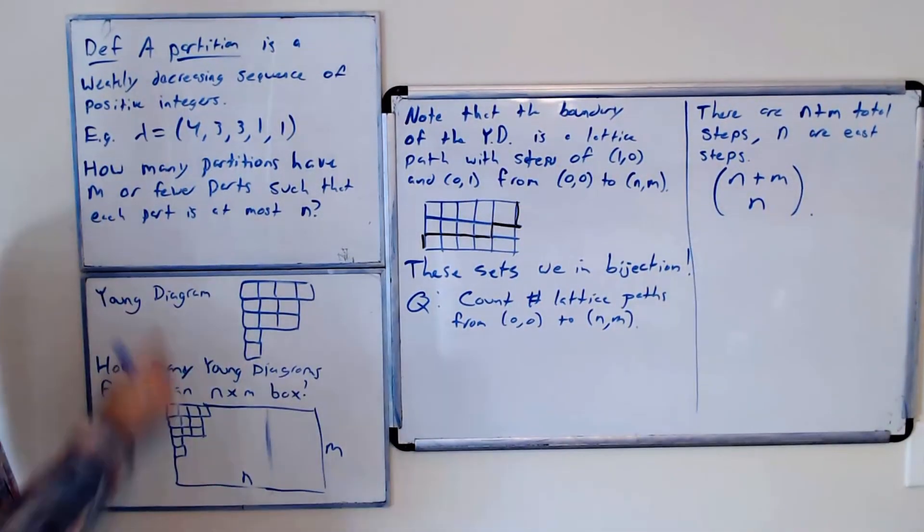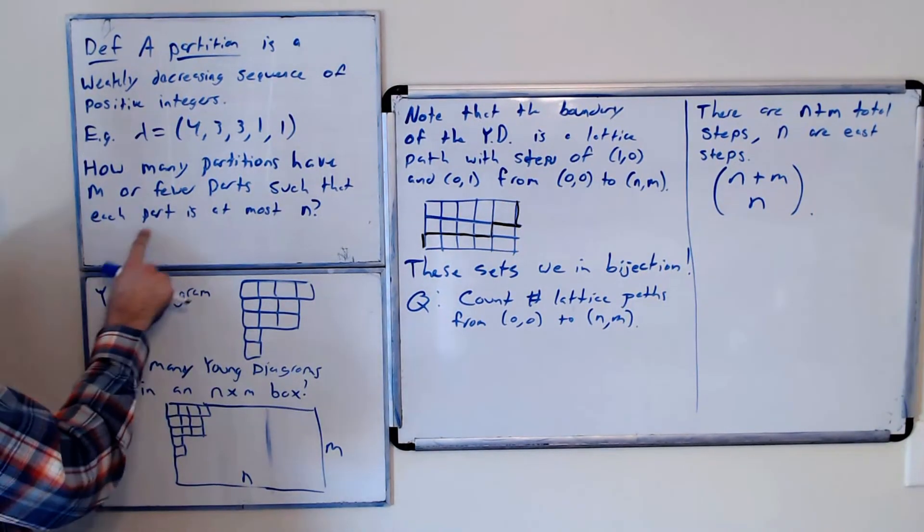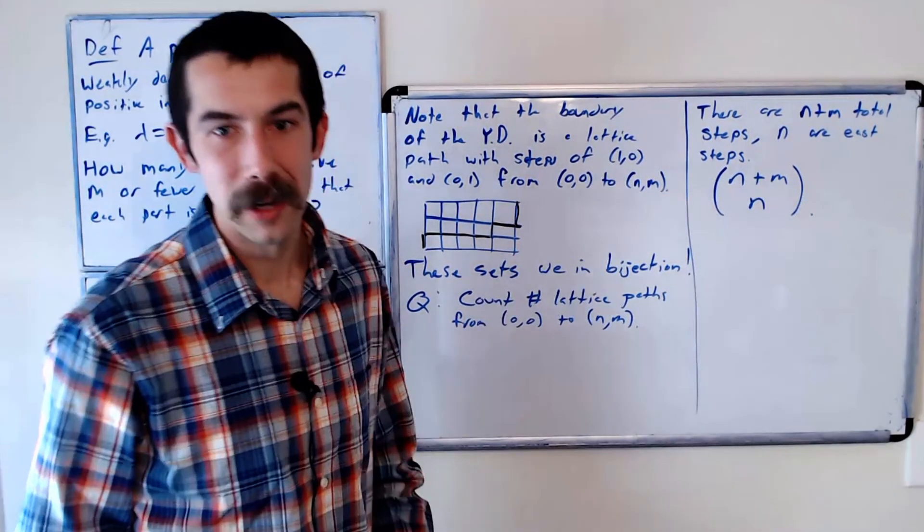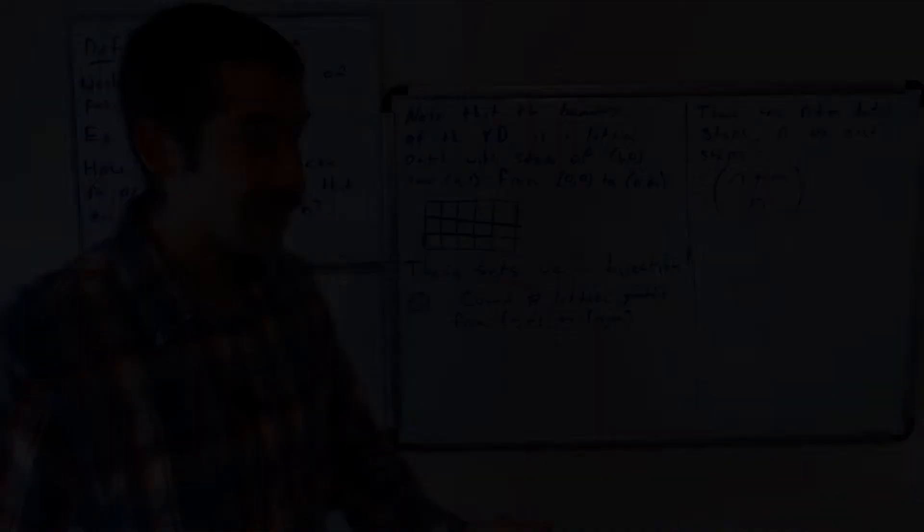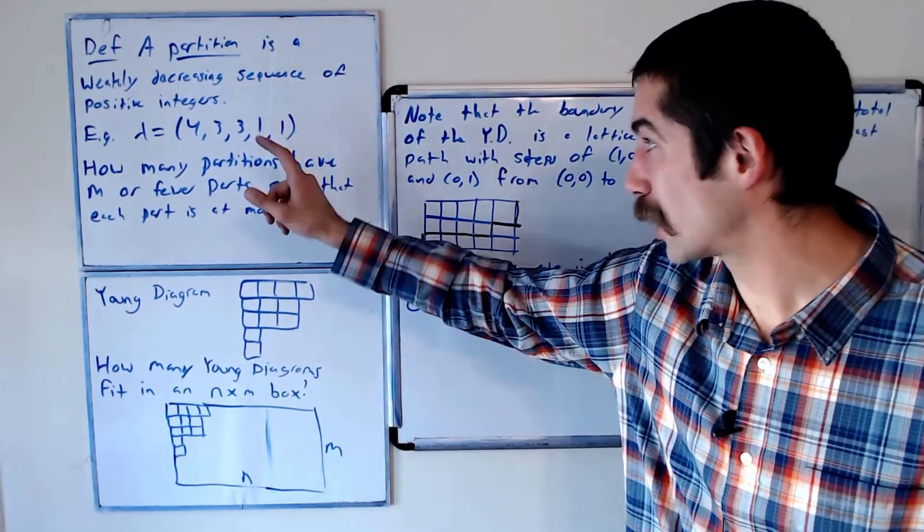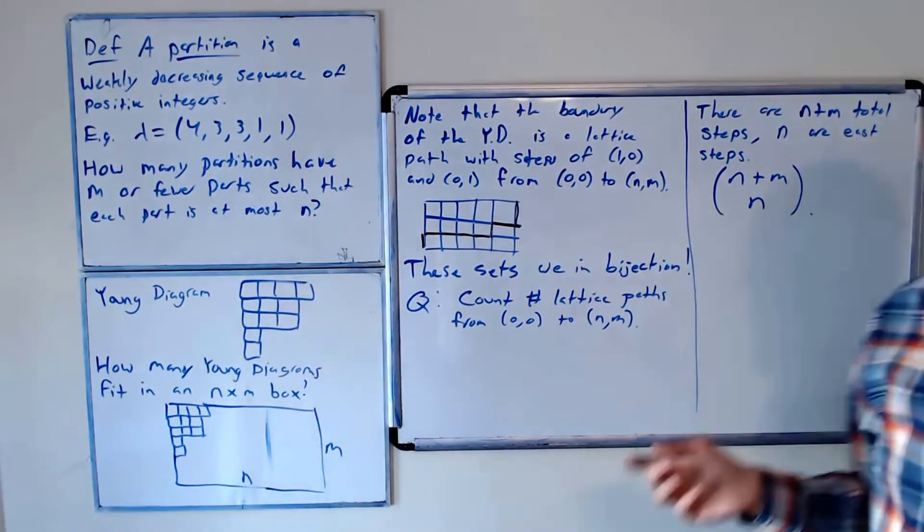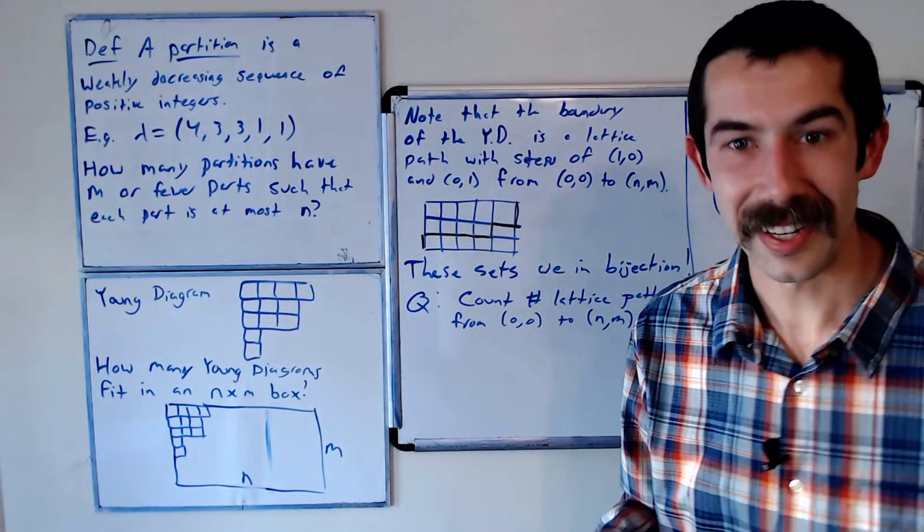So the total number of partitions that have M or fewer parts, such that each part is at most N, is (N+M) choose N. How cool is that? Usually, you don't expect partitions and binomial coefficients to be related to each other, but in this case, they are.